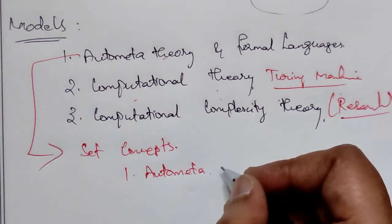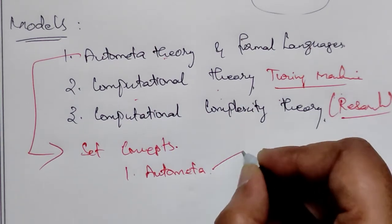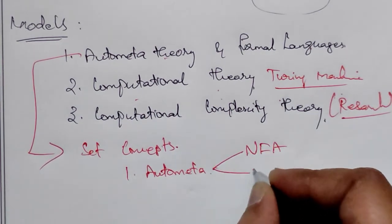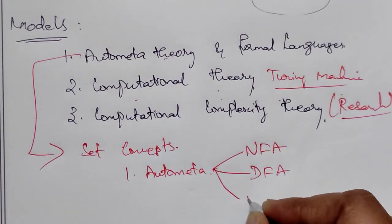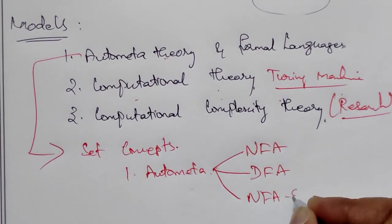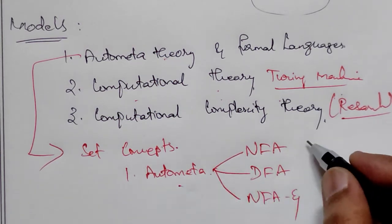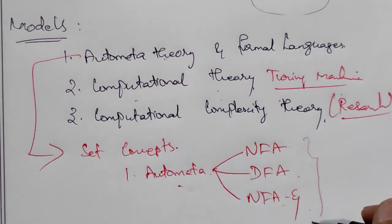In automata we have different things. We have DFA, NFA, and NFA-Epsilon — three different types of automata. This will be covered in detail in upcoming videos.